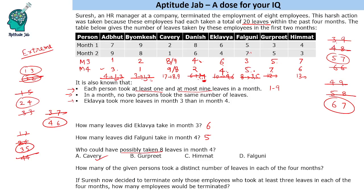How many of the given persons took a distinct number of leaves in each of the 4 months? Adbhut, Byomkesh, Kaveri, and Danish took distinct numbers. Eklavye had a repeat, Falguni had a repeat, Gurpreet had a repeat, and Himmat took distinct numbers. So 5 such people took distinct number of leaves. Finally, if Suresh decided to terminate only those employees who took at least 3 leaves in each of the 4 months, Adbhut, Byomkesh, Kaveri, and Danish would not be terminated, while Eklavye, Falguni, Gurpreet, and Himmat would — so 4 employees would be terminated.